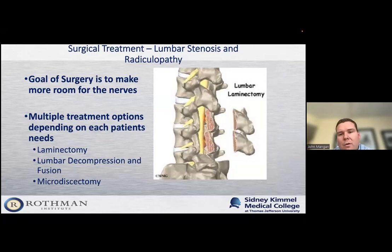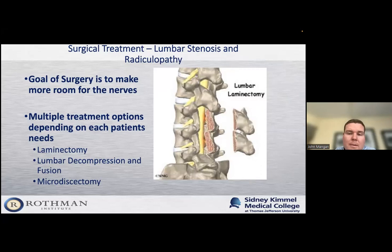For patients who have failed conservative management and time, and whose symptoms are progressing to the point where they feel they need another form of treatment, we usually talk about surgical intervention. The goal of surgery is really to make room for the nerves. There are a variety of ways to do that. The first is a laminectomy, which involves removing some of the bone in the back of the spine and the ligament to expose the nerves and make sure they're all open. This doesn't require rods or screws — it's purely to open up that area, take the pressure off the nerves, and alleviate patient symptoms.